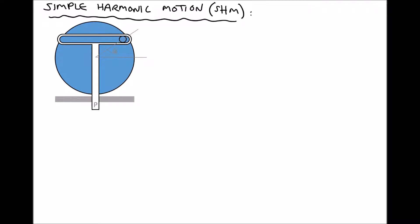Pictured on the screen here we have a device known as a Scots yoke, and the Scots yoke is used to translate rotational motion into linear motion. Pictured in blue we have a rotating disc, and that rotating disc is going to have an angular velocity omega. There is a pin attached to the disc and the pin is free to move in the slot of the yoke.